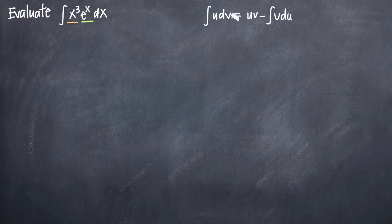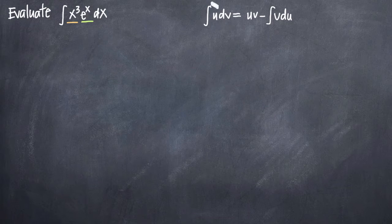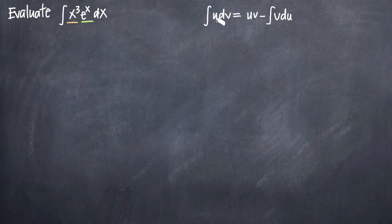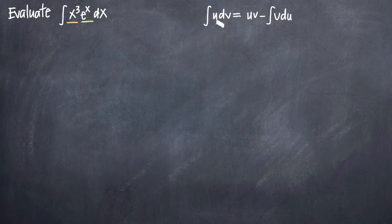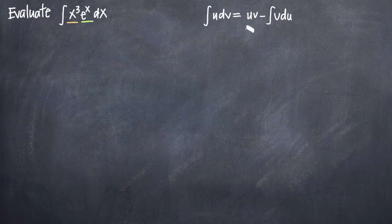What it tells us is that when we have an integral — when we're asked to take the integral of two pieces that are multiplied together, u and dv — the formula we'll use is u times v minus the integral of v times du. So essentially we need to identify which part of our integral is u and which part is dv. Then once we've identified u and dv, we'll take the derivative of u to find du and the integral of dv to find v. Those four components — u, du, v, and dv — we can plug into our formula.